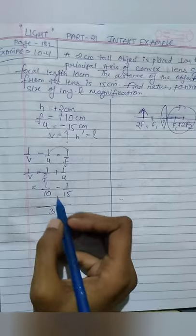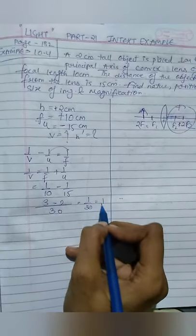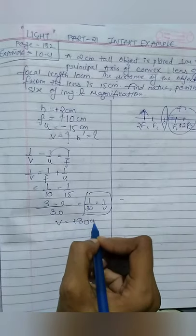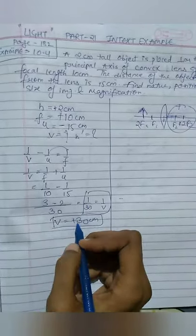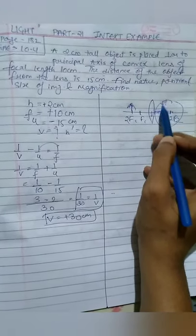We take 30, so here we have 3 minus 1 by 30 equal to 1 by v. What is the value of v? Plus 30 cm. Plus v means right side, image means right side, so this distance is positive.